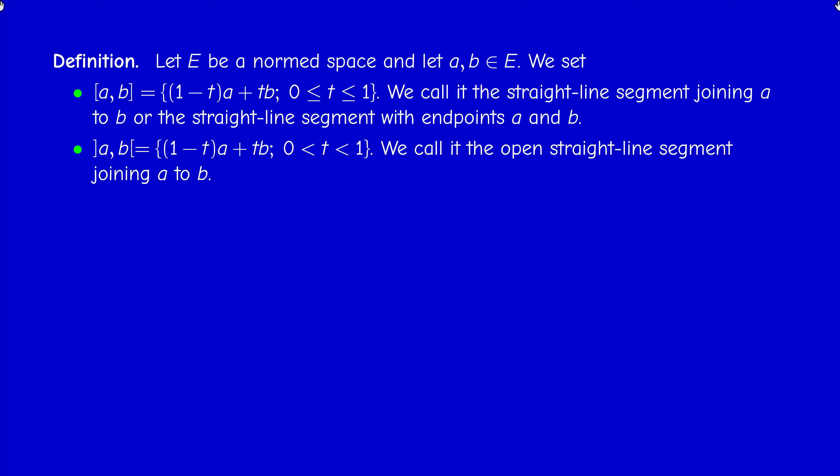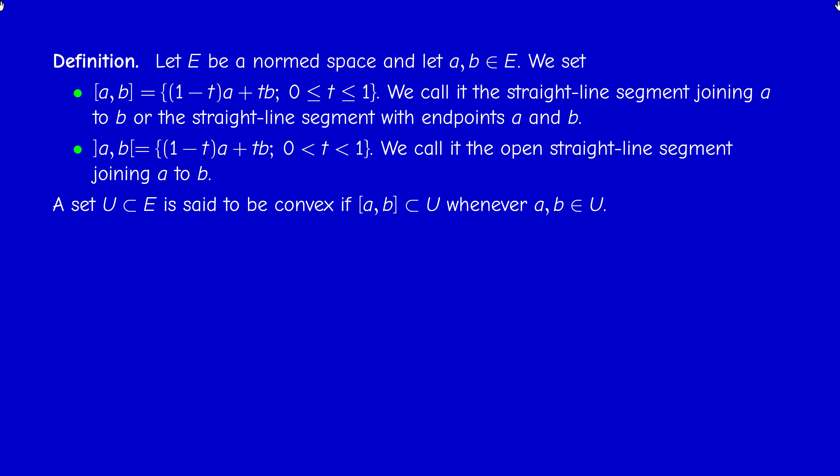When E = ℝ, these definitions coincide with the usual closed and open intervals [a, b] and (a, b). A subset of a normed space is called convex if, whenever we have two points in the set, the whole straight line segment joining them is also contained in the set — equivalently, for every a, b in U and every t ∈ [0, 1], the point (1 − t)a + tb is in U.